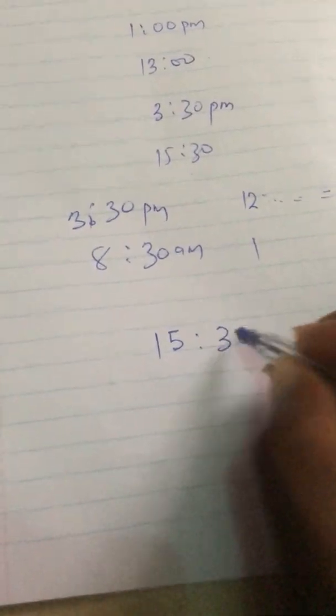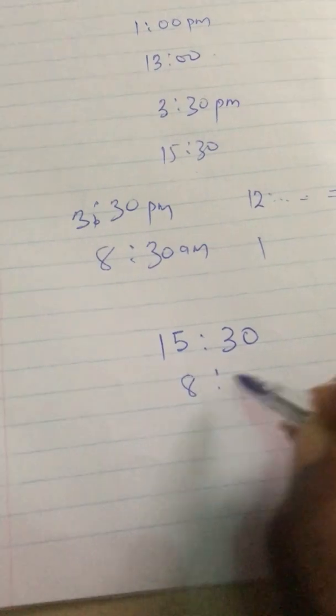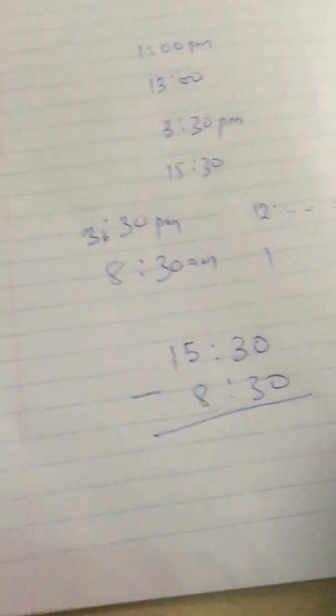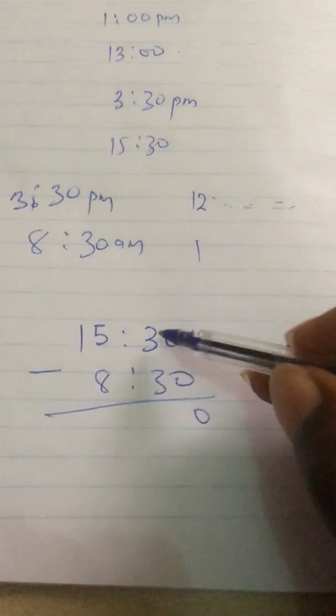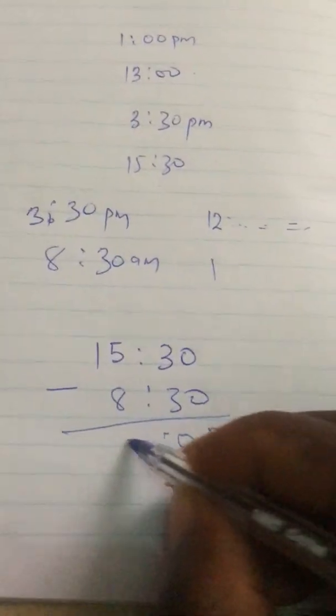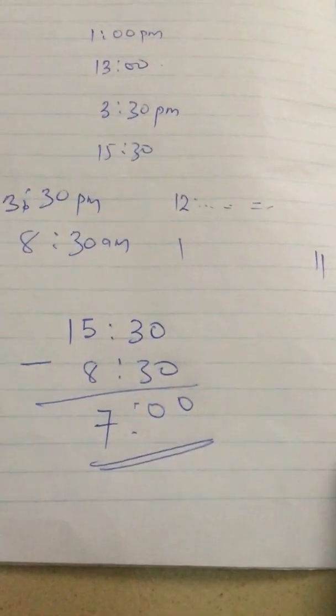Let's say you are asked to subtract 8:30 AM from 3:30 PM. Since we have a PM and an AM, we convert 3:30 PM to 15:30. Then we subtract 8:30. Zero minus zero is zero, three minus three is zero, fifteen minus eight is seven — so the answer is 7:00.